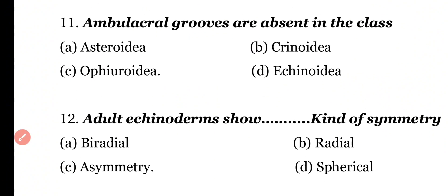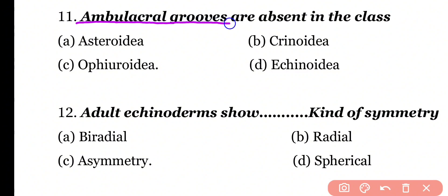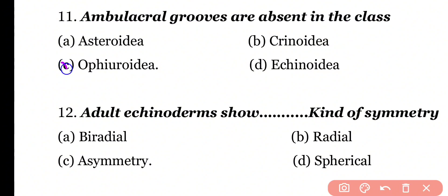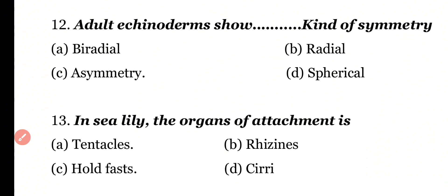Question 11: Ambulacral grooves are absent in the class Asteroidia, Crinoidia, Ophiuroidia, or Echinoidia? Correct answer is Option C. Ambulacral grooves are absent in class Ophiuroidia.